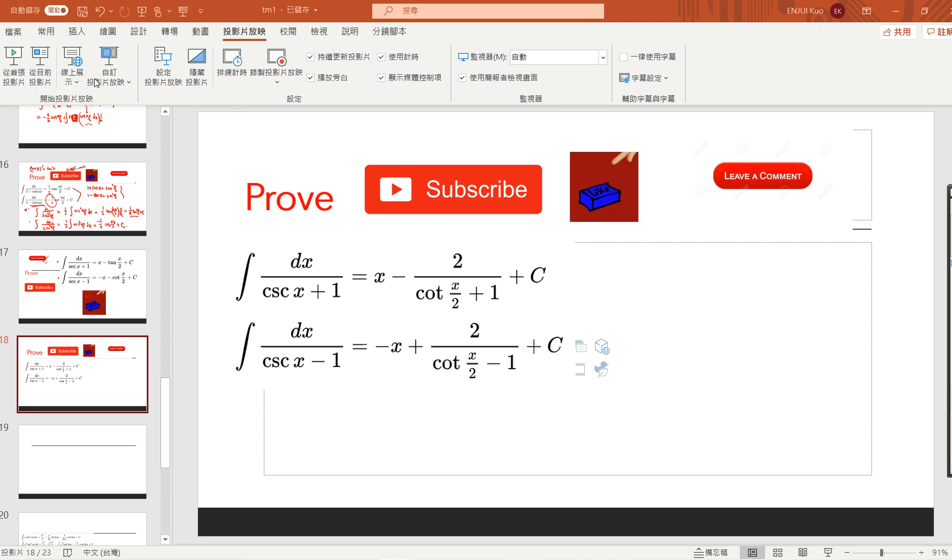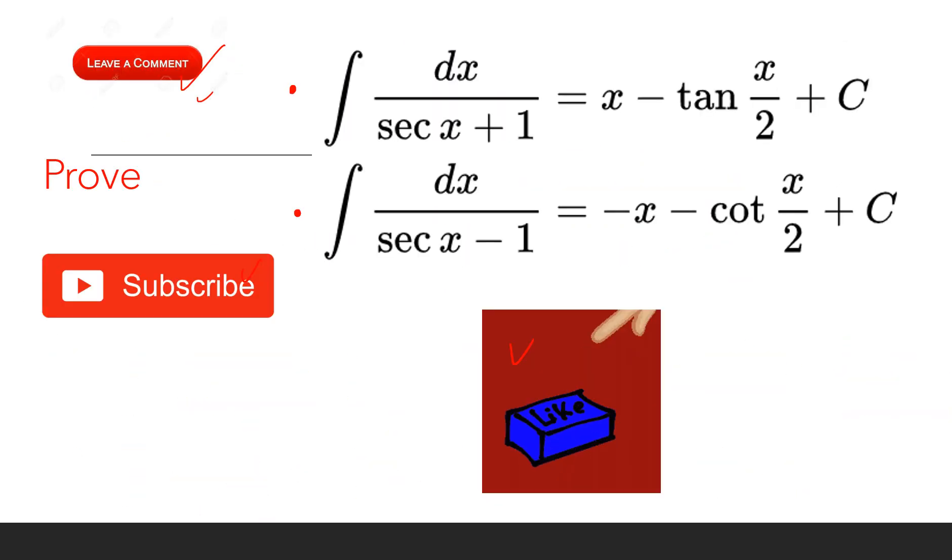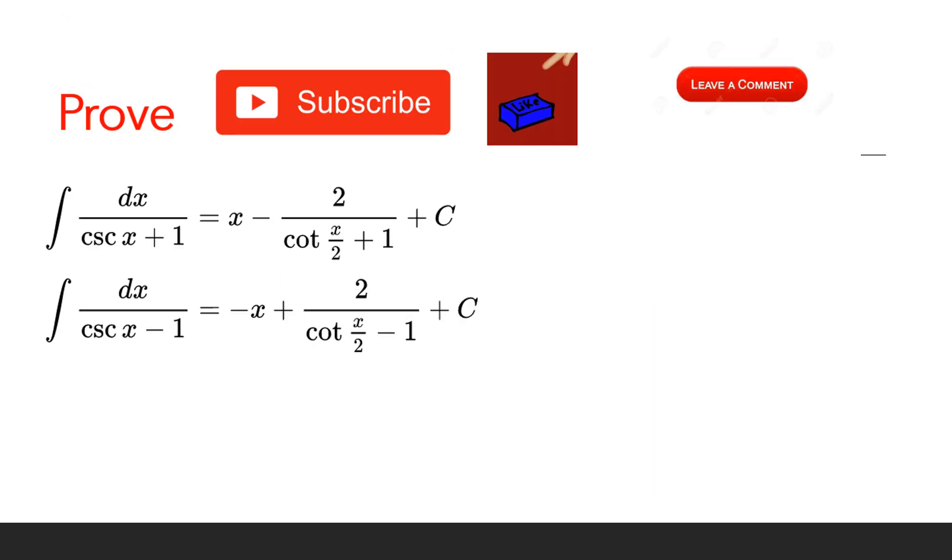So today we are going to solve these two integrations. Suppose we already know that dx over secant x plus 1 equals x minus tan(x/2) plus C, then we need to solve the cosecant one.